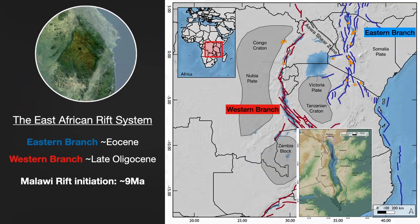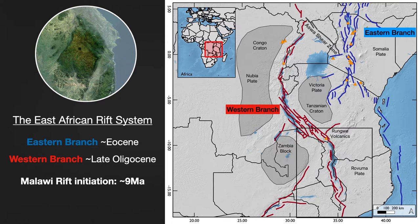Just to put things into more regional context, the Malawi Rift is one of the southernmost and youngest expressions of the East African Rift system, which is a series of rifts that stretch from the Afar Triangle in the northeastern corner of Africa to just off the coast of Mozambique. The East African Rift is divided into two separate branches — the eastern and the western branches — that diverge around the Tanzanian Craton. The eastern branch is magmatic whereas the western branch is largely amagmatic, particularly in the southern half near Malawi. The East African Rift gets younger as you move south, and the Malawi Rift is currently active and is thought to have initiated around nine million years ago, whereas the East African Rift itself is thought to have initiated in the Eocene.